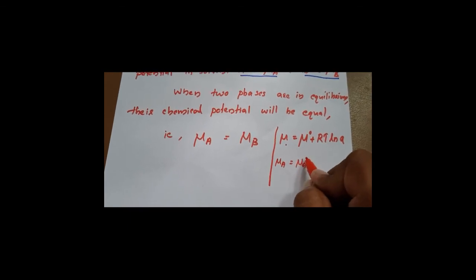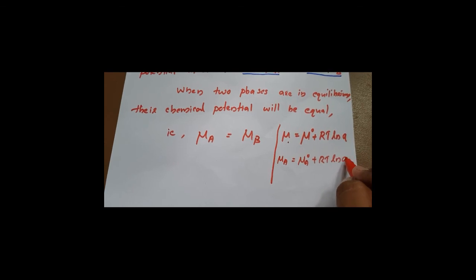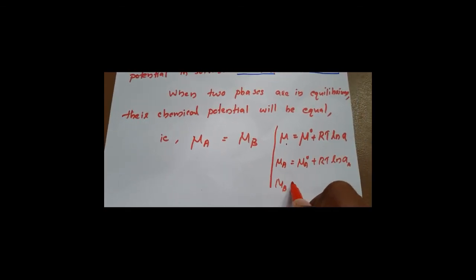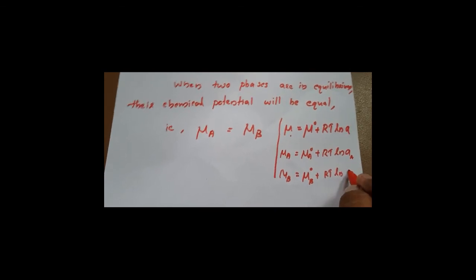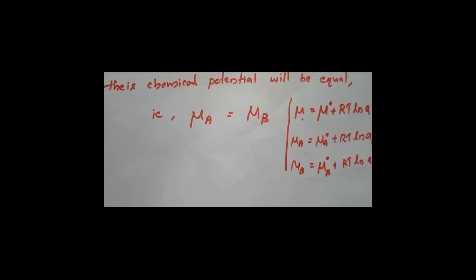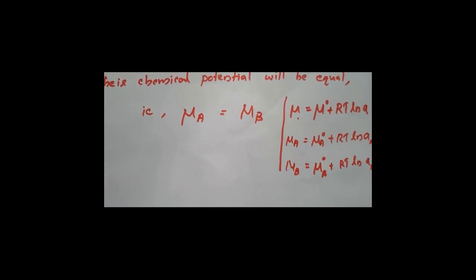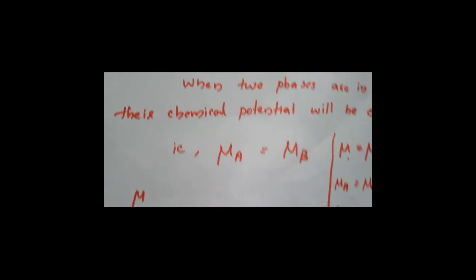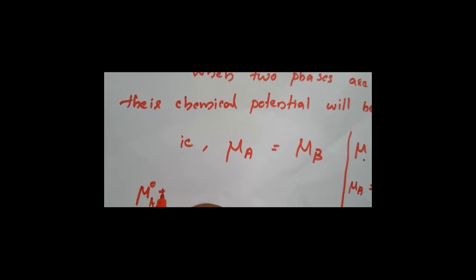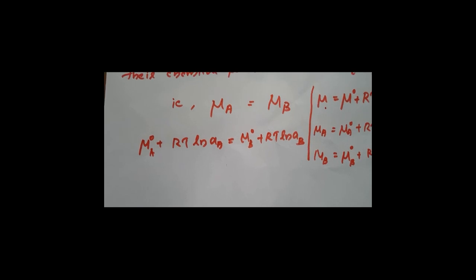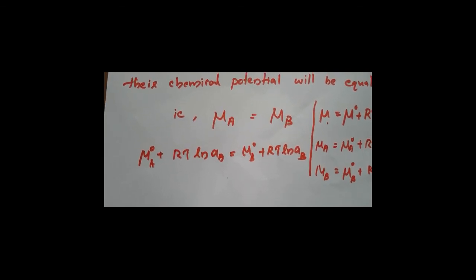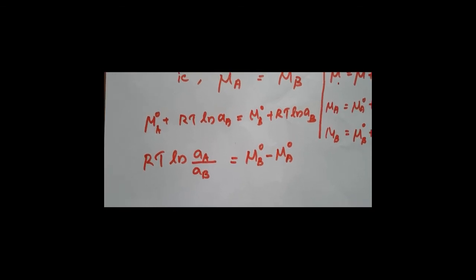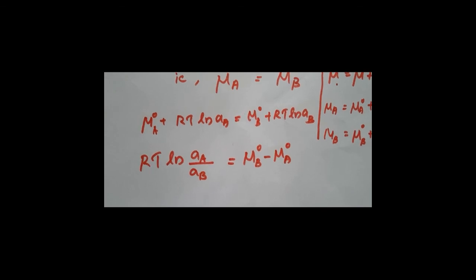For this particular system, μA is equal to μA₀ plus RT ln AA, and μB is equal to μB₀ plus RT ln AB. Substituting μA and μB, the equation becomes μA₀ plus RT ln AA is equal to μB₀ plus RT ln AB. Rearranging this equation, we get RT ln(AA / AB) is equal to μB₀ minus μA₀.